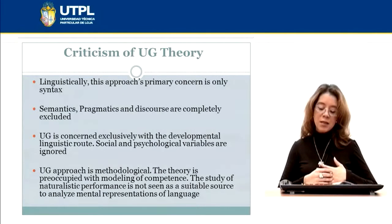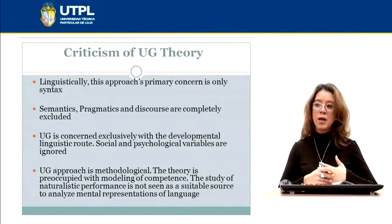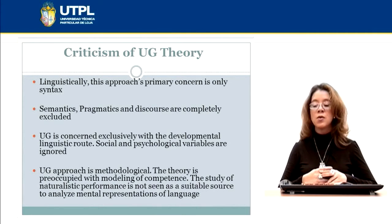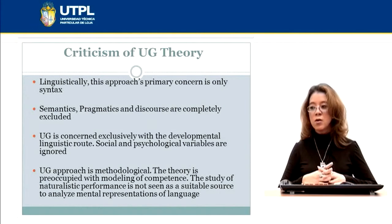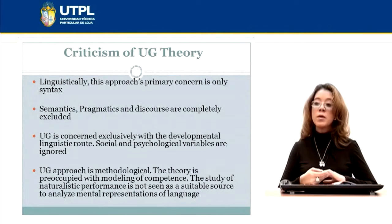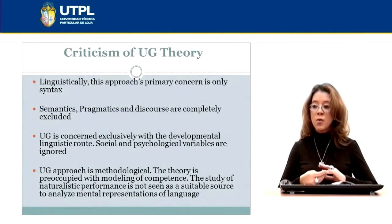Some scientists and psychologists criticize the universal grammar theory because linguistically this approach is primarily concerned only with syntax. Semantics, pragmatics and discourse are completely excluded from universal grammar. A universal grammar approach with a developmental linguistic root — social and psychological variables — is ignored. The universal grammar approach is just methodological, and this theory is preoccupied with the modeling of competence.